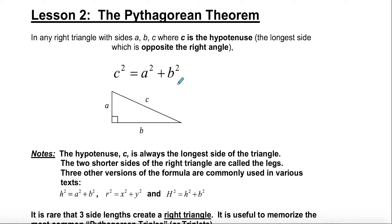The formula is c² = a² + b². The a and b — it doesn't really matter which one you call a or b — these are called the legs of the triangle. What is directly across from the right angle is the hypotenuse, which is going to be the longest side of the triangle.